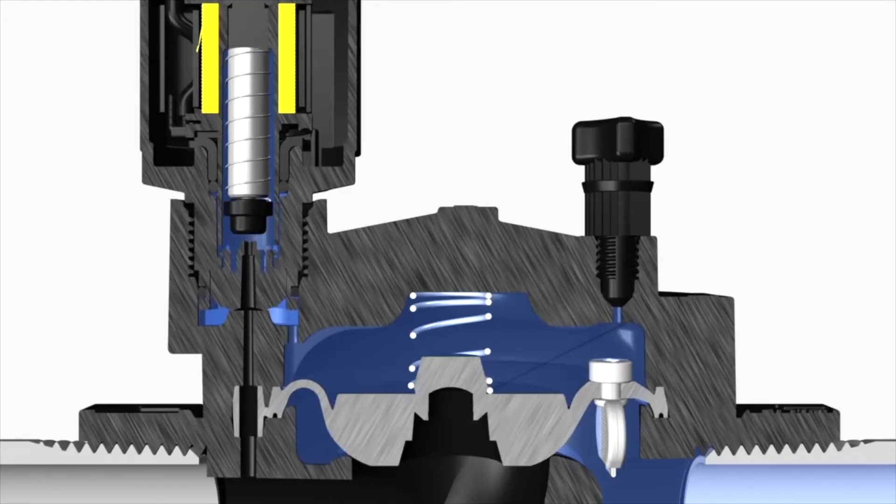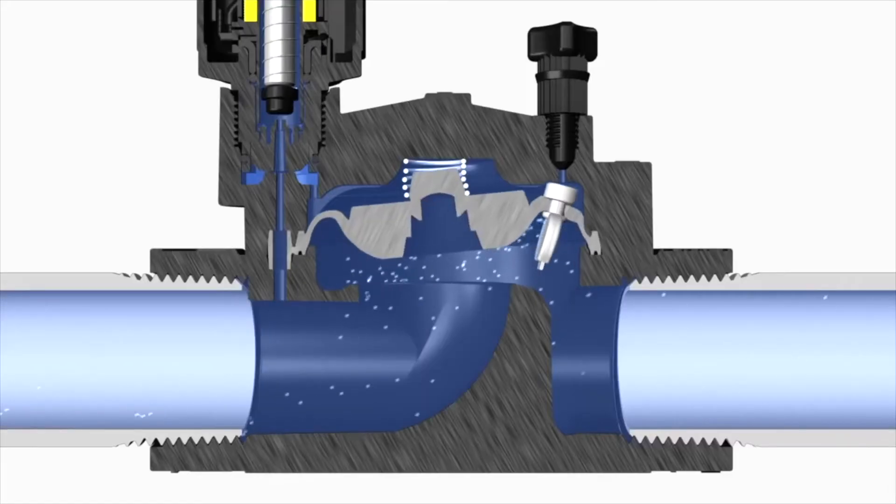This allows water to move into the bottom of the valve. The bottom of the diaphragm now has a larger surface area of water than the top, thus the diaphragm opens and the zone turns on.